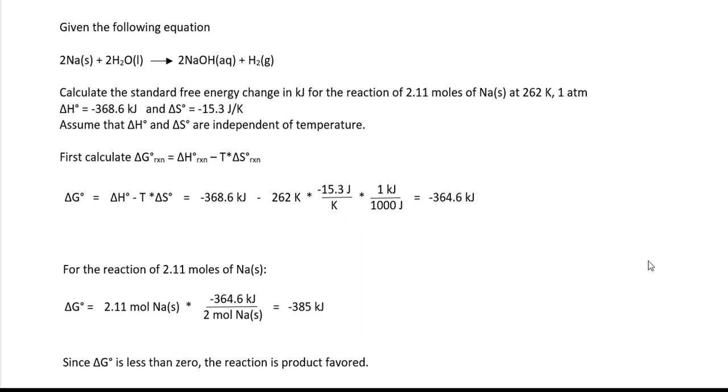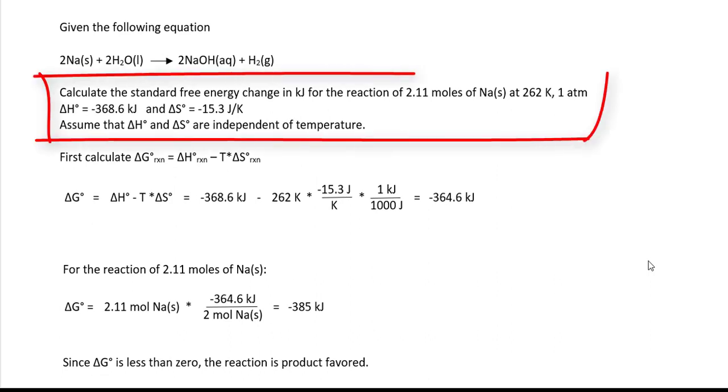Here, we're given a reaction between sodium and water. Calculate the free energy change in kilojoules for the reaction of 2.11 moles of sodium at 262 Kelvin and one atmosphere. The delta H for the reaction is negative 368.6 kilojoules, and the delta S is negative 15.3 joules per Kelvin. Just pay attention to the units here.